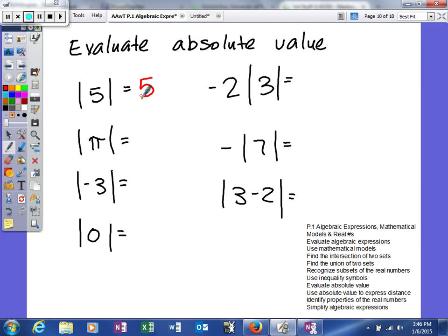So the important word in that definition is the word distance because distance always has to be positive. So keep that in mind. The absolute value of 5 is 5. The absolute value of pi is pi. The absolute value of negative 3 is a positive 3. So no matter what, you're going to have to get an answer of a positive number.